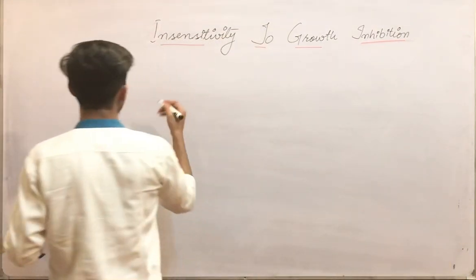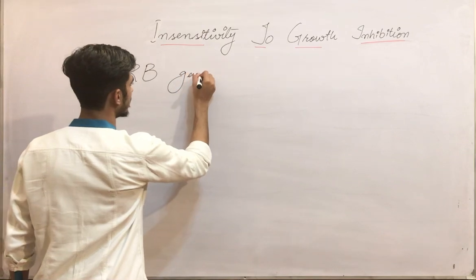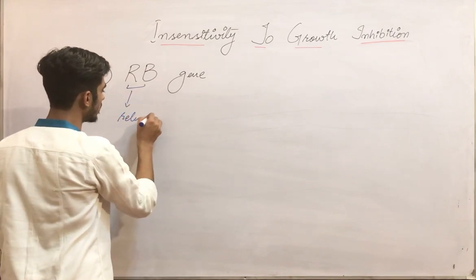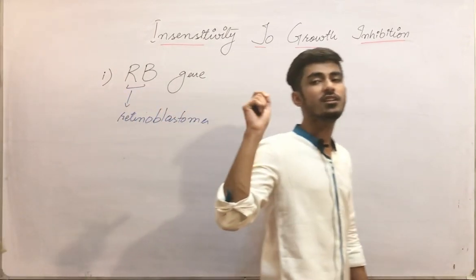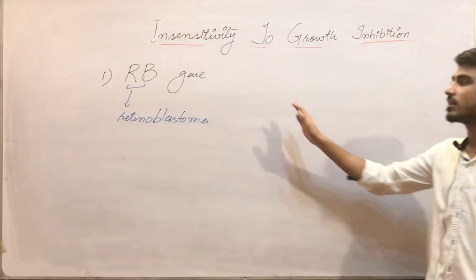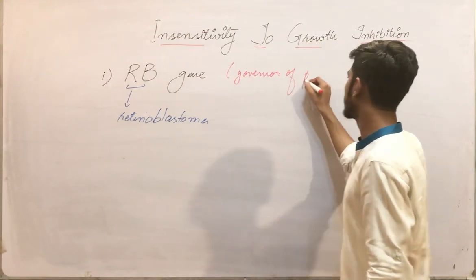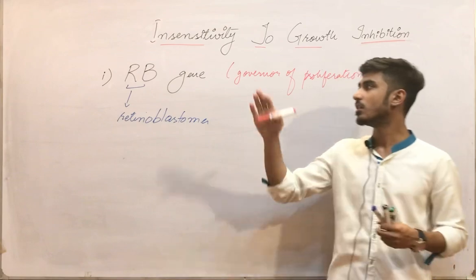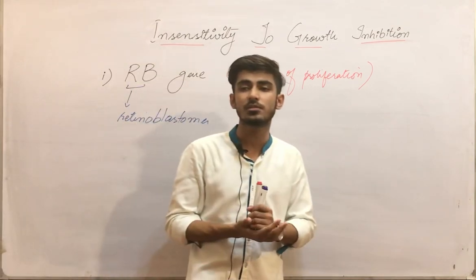First, we are moving on towards the first important tumor suppressor gene, which is called the RB gene. RB is derived from the word retinoblastoma. Mutation in this RB gene results in retinoblastoma — the cancer of the retinal cells, of the retina. That's why it is called the RB gene, and it is also known as the governor of proliferation.